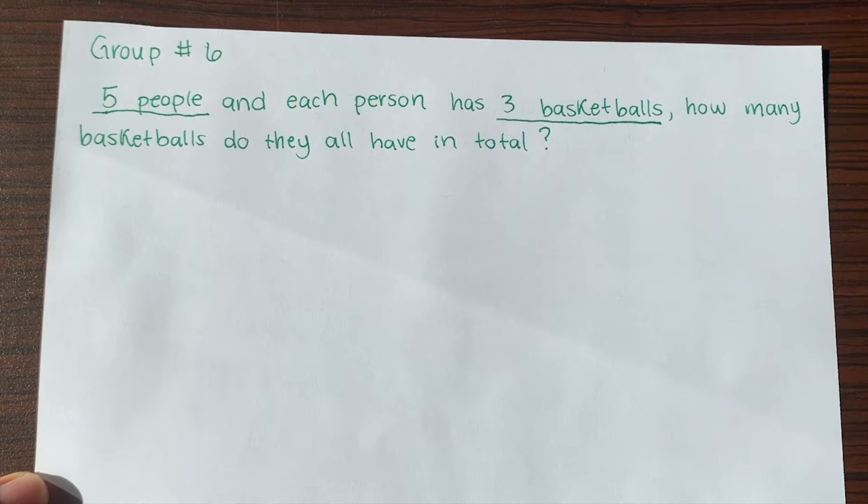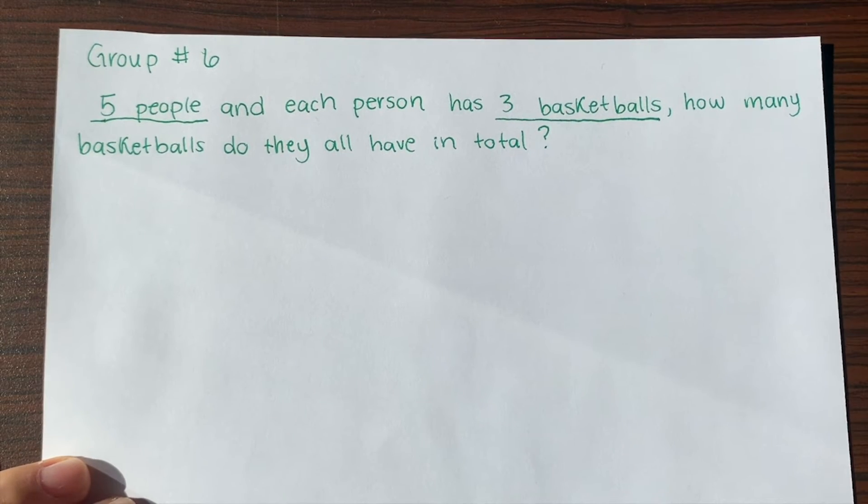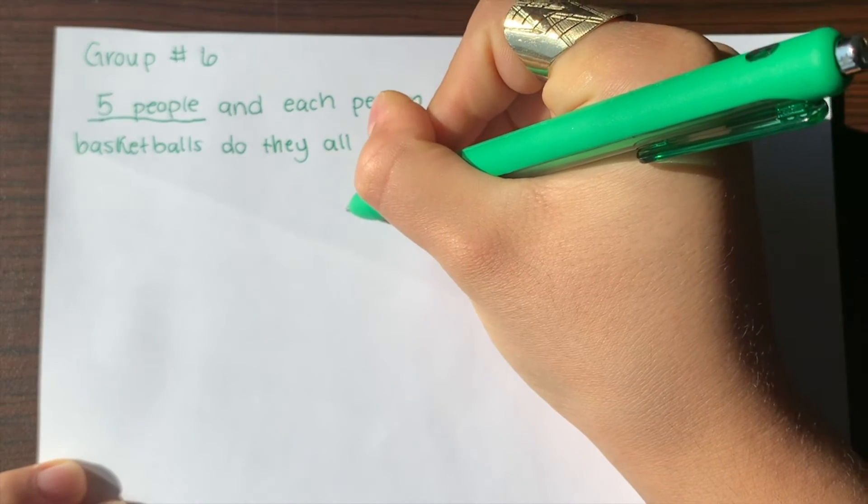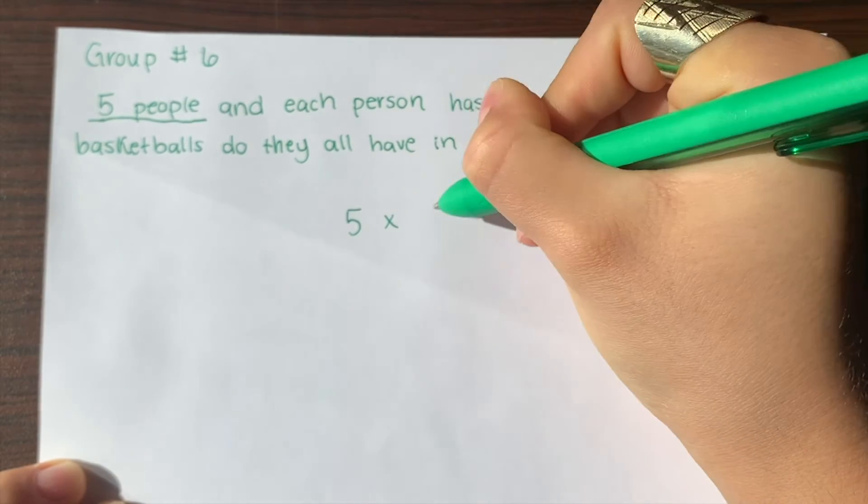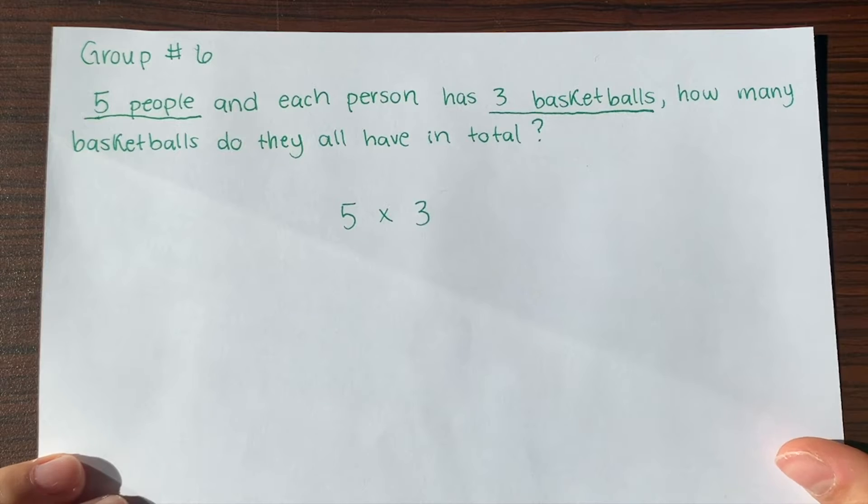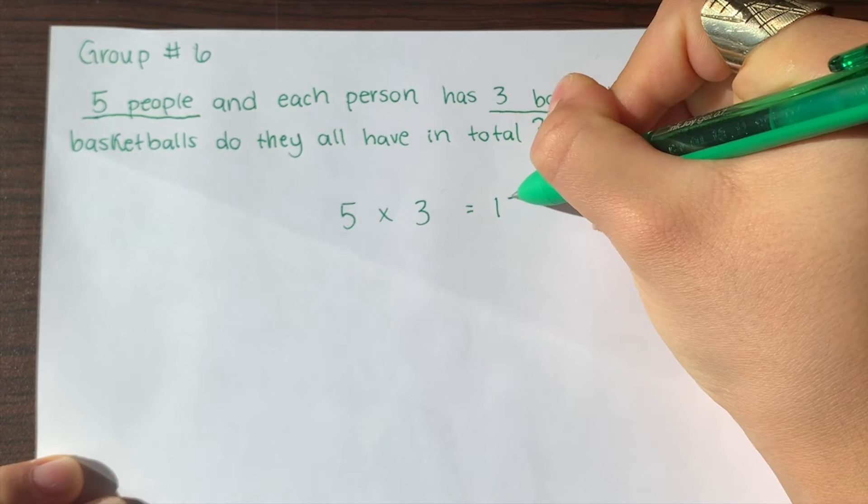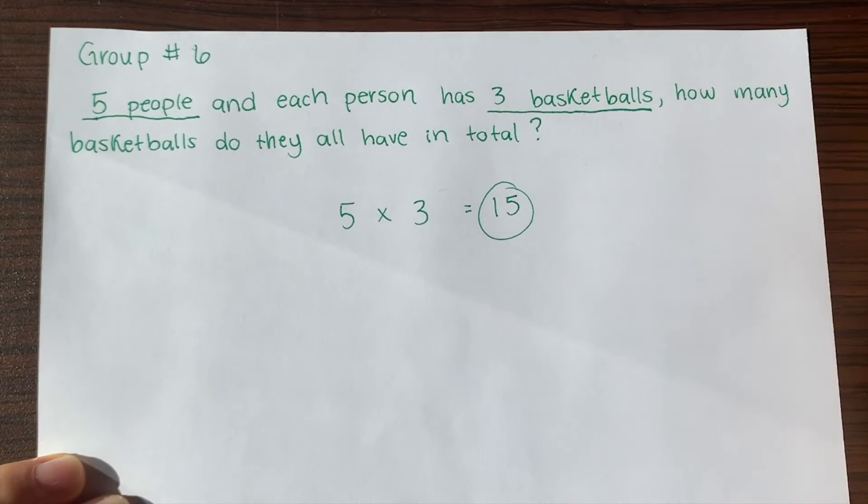To put an equation together we're going to do 5 multiplied by 3 and that's going to give us the number that they all have together. So 5 times 3 equals 15. That gives us the amount of basketballs that they all have.